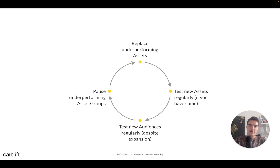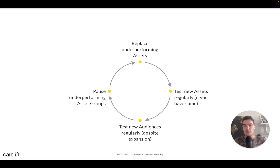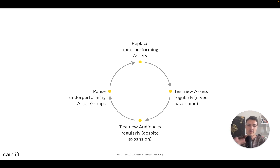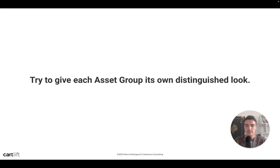Then you start the cycle again — replace underperforming assets, test new assets regularly, and so on. The most fundamental thing at the asset group level is the assets themselves. They drive the most performance. You can have a slightly underperforming audience, but great assets will make up for it. Try to give each asset group its own distinguished look — that's very important.